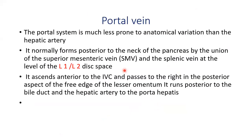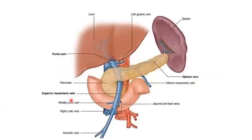The portal system is much less prone to anatomical variation than the hepatic artery. It normally forms posterior to the neck of the pancreas by the union of the superior mesenteric vein and the splenic vein at the level of the L1 to L2 disc space. It ascends anterior to the IVC and passes to the right in the posterior aspect of the free edge of the lesser omentum, running posterior to the bile duct and the hepatic artery to the porta hepatis.